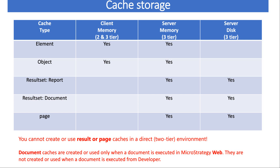An important thing you need to remember is your element cache and object cache can be created in two-tier architecture as well. I hope you know about it - if not, do let me know and I will create a separate video for two-tier, three-tier, multi-tier architecture in MicroStrategy. Two-tier is called as client architecture and three-tier is called as server side architecture. So element and object cache can be created at the client side as well as the server side. Remember that only element and object cache can be created at the client side.